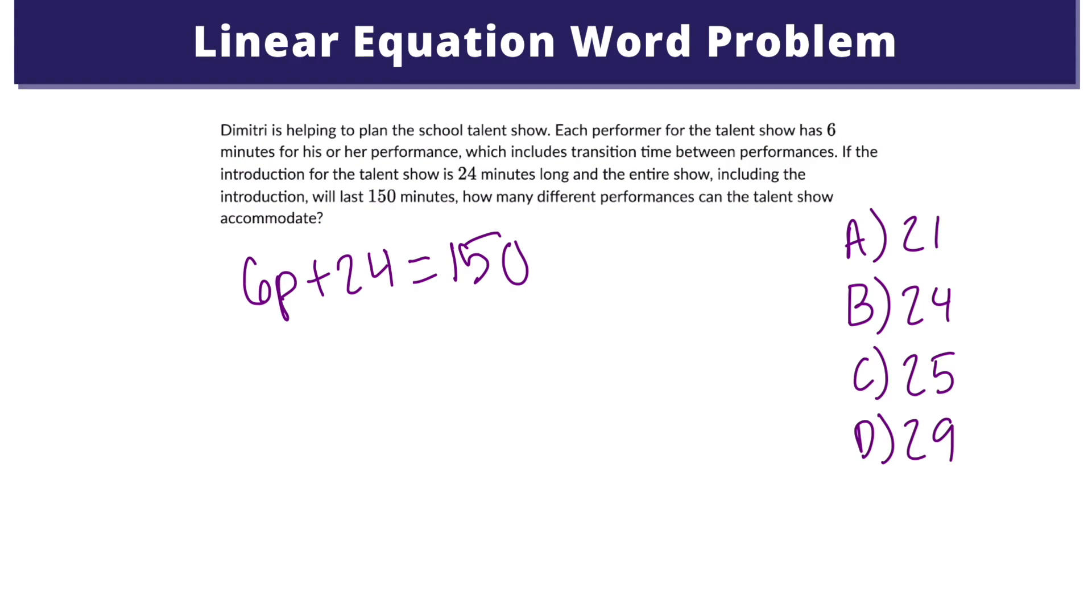Now let's solve this equation. First, I'm going to subtract 24 on both sides, and that gives me 6p equals 126. Then I isolate p and that gives me p equals 21. The question is asking how many different performances can the talent show accommodate. So it can accommodate 21 performances.